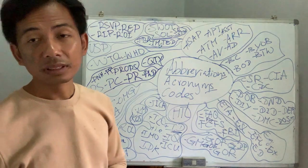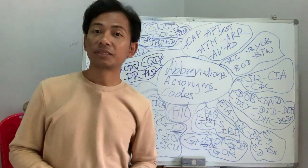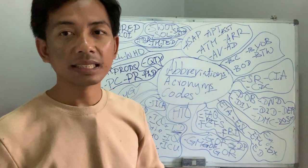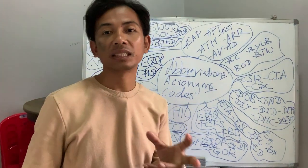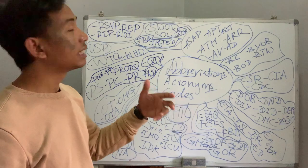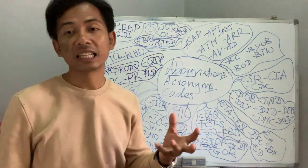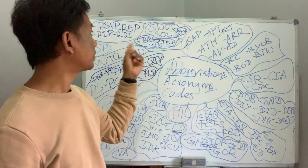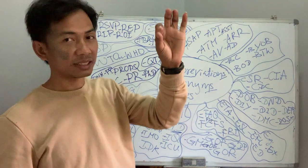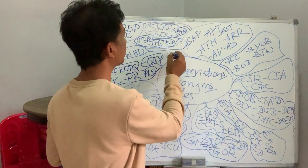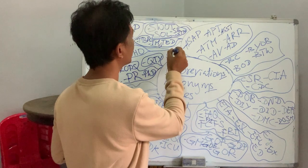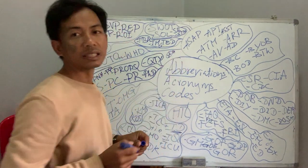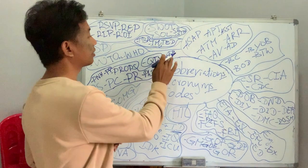TM also stands for trademark. If you create a logo for your business identity and register your company with an international organization, your logo gets a trademark. Mostly TM appears on the top of the logo — that symbol is the trademark.